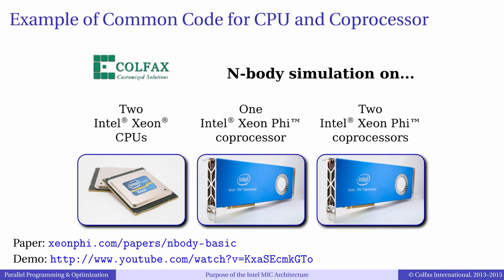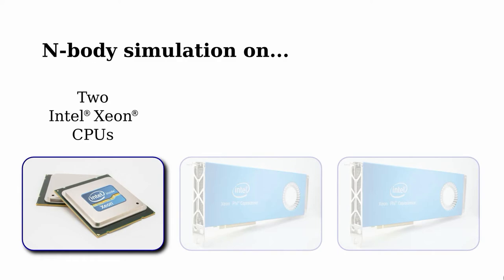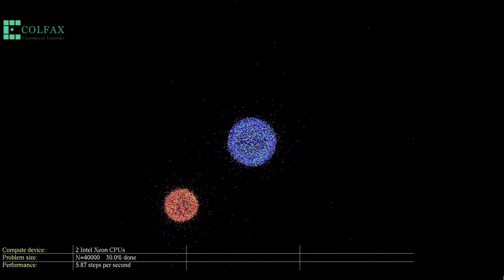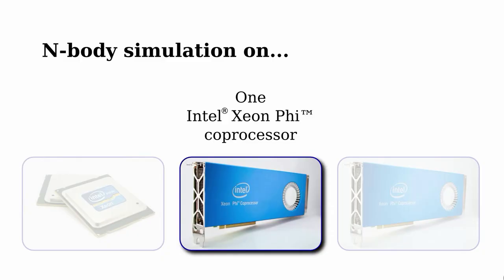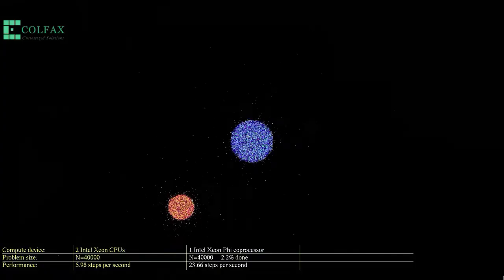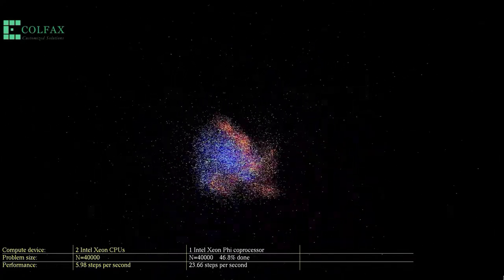Let us take a look at a case study which compares the two architectures using a simple n-body simulation. The key element here is that the same exact C code is benchmarked on the two architectures and even scaled across multiple co-processors. In our simplified implementation, 40,000 particles interact gravitationally with each other, and thus the algorithm complexity is O(n²). We first benchmarked the simulation on two Intel Xeon CPUs — with Xeon processors the performance is about 6 steps per second. Next, we ran the same performance-critical code on one Xeon Phi Co-Processor using an explicit offload programming model, and observed a 4x speedup.